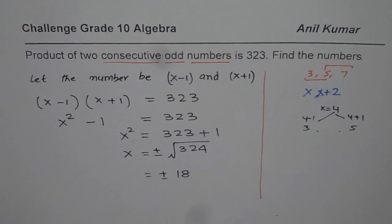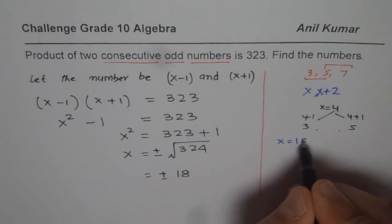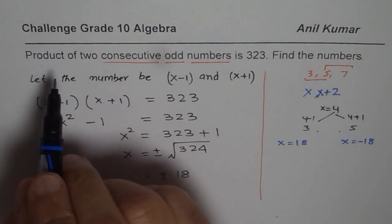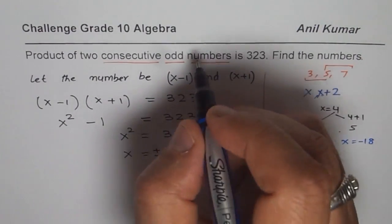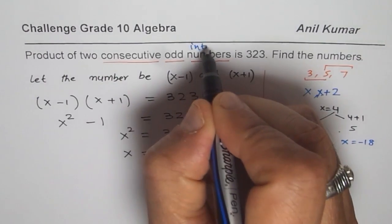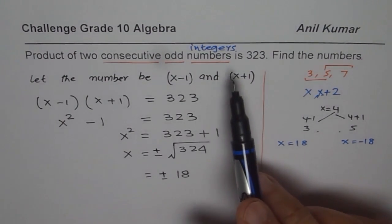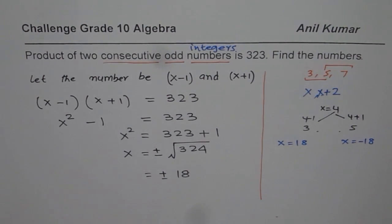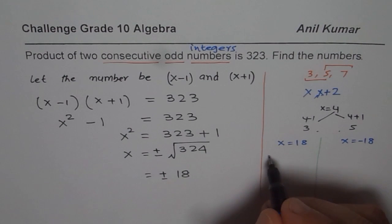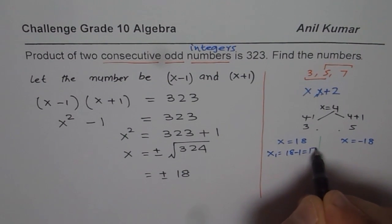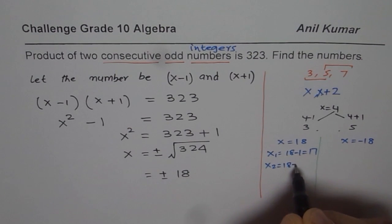Well if x is equals to 18, we are taking plus, or x could be minus 18. We could have said product of two consecutive odd integers also instead of numbers. That was a better term so that it gives you a clear idea that we should also consider the negative numbers. So we have two possibilities. If x is plus 18 then my numbers are x1 equals to 18 minus 1 which is 17 and the other number is 18 plus 1 which is 19.